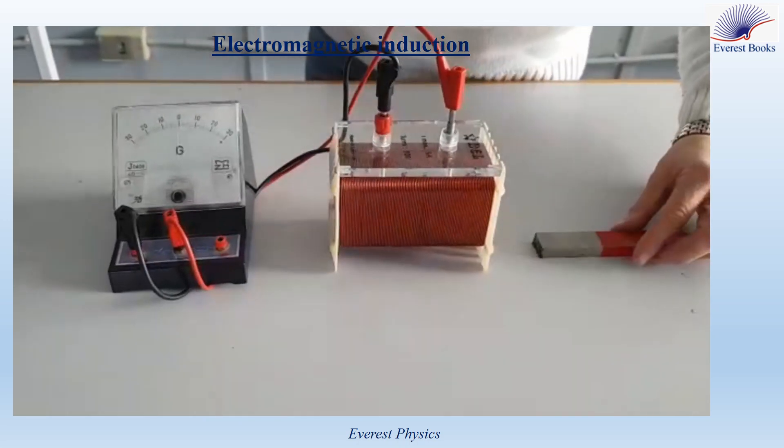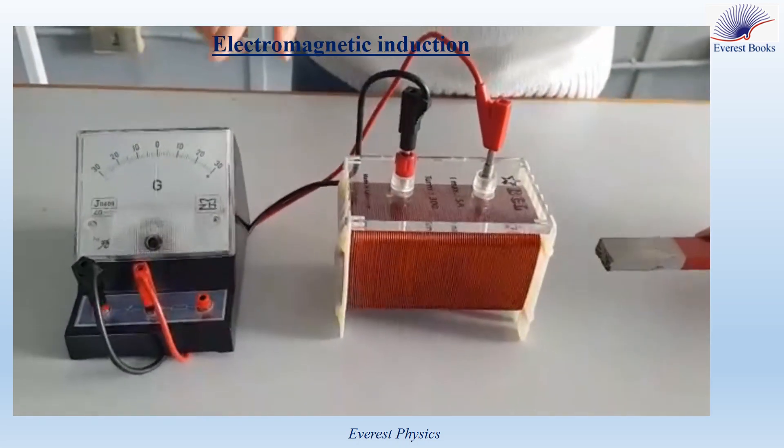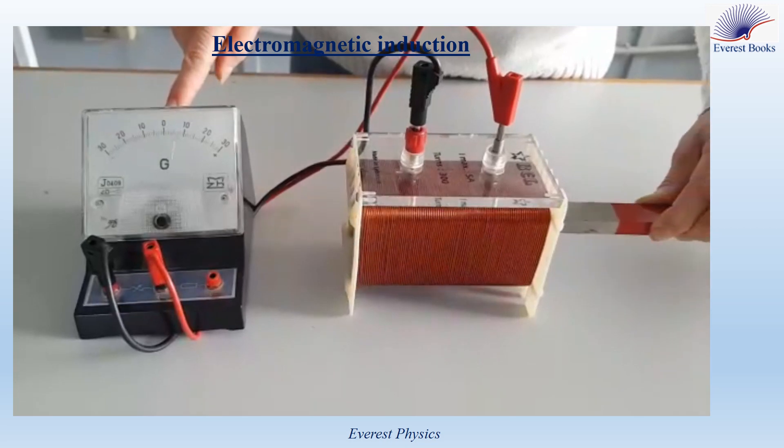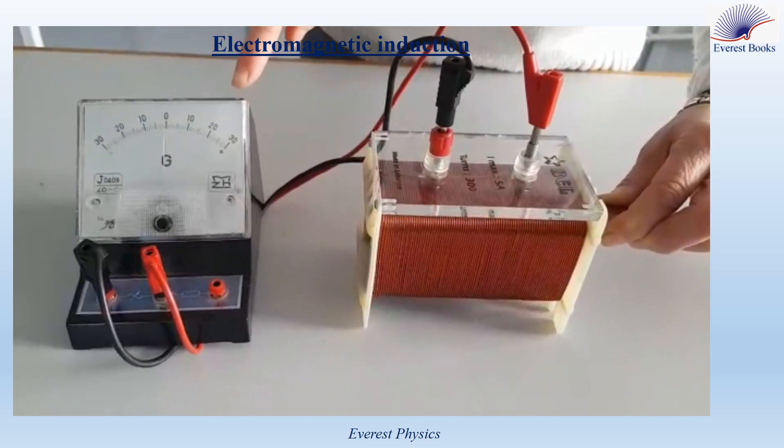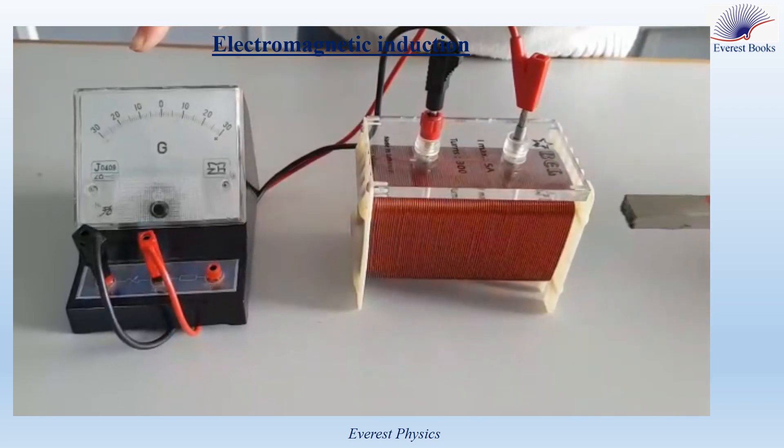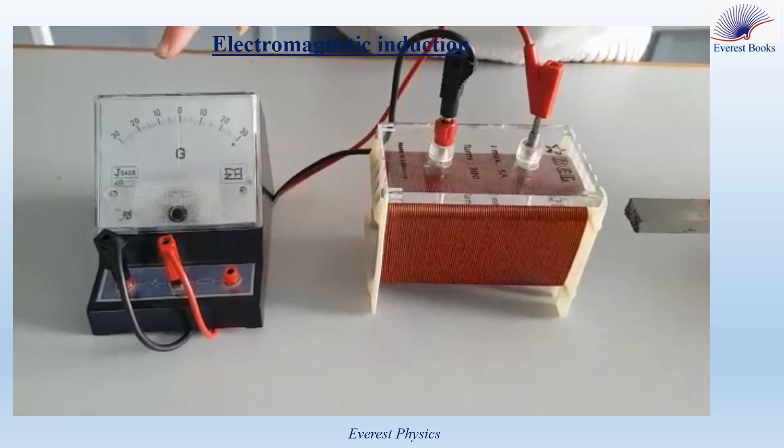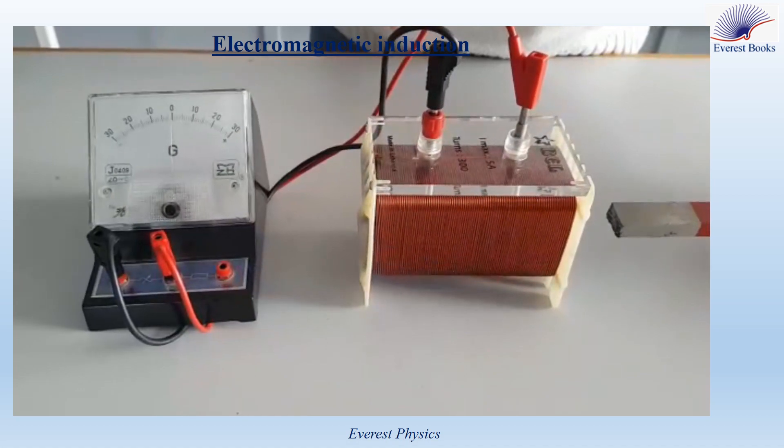But what happens if I move the magnet towards the coil? You see that the needle deflects in a certain direction, and when I move the magnet away from the coil, the needle deflects in the opposite direction.